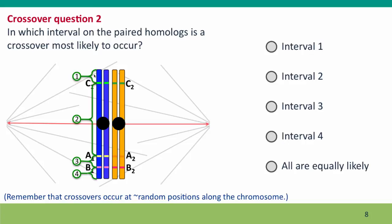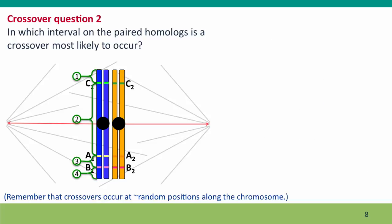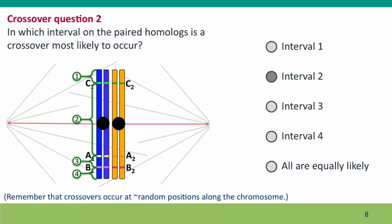Here's another variant of the question. In which interval on the homologs is a crossover most likely to occur? And that changes the answer, because now we're considering the sum of all the points in each interval. And because interval two is much bigger than the other intervals, we can be confident that a crossover is most likely to occur in interval two.